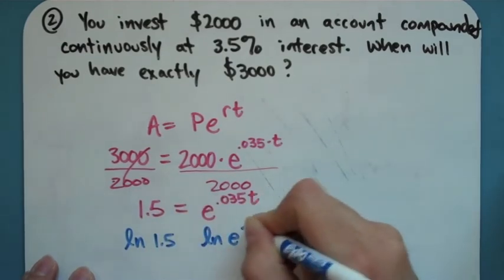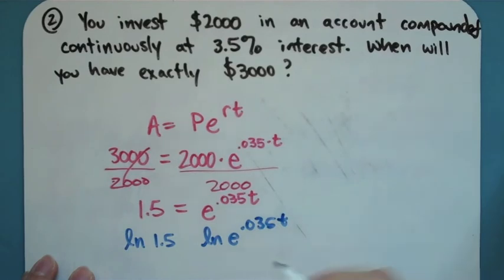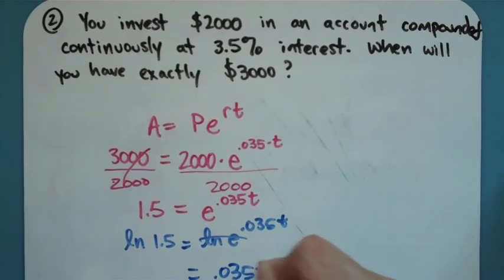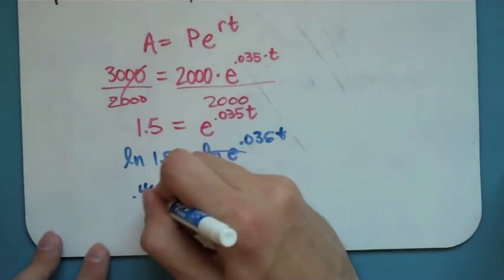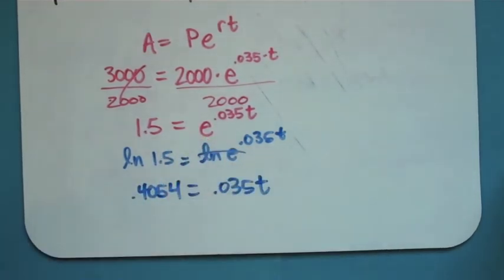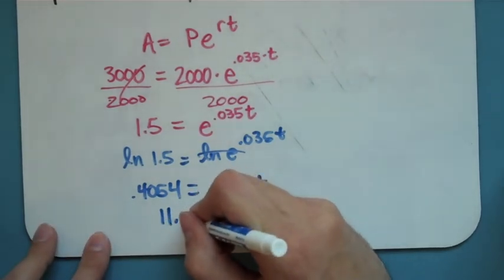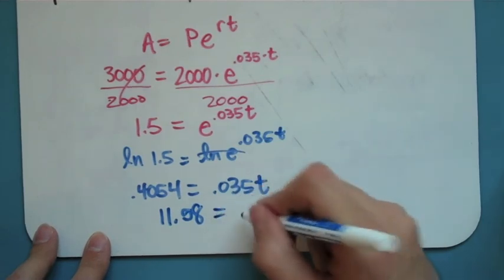When I do that, my natural log and my e are going to cancel. So I end up with .035t on this side. And I just have to do the natural log of 1.5, which is going to be .4054. And I divide both sides by my .035 to get t by itself. I end up with 11.58 years.